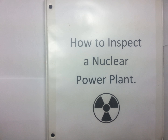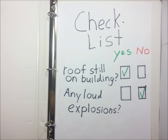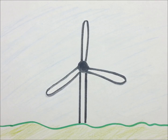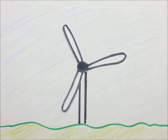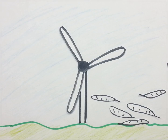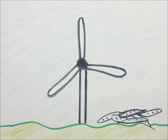So what should we do to avoid this problem in the future? We could improve government-regulated safety inspections. How about we just eliminate nuclear power altogether? After all, solar and wind power have never hurt anybody. Well, almost never.